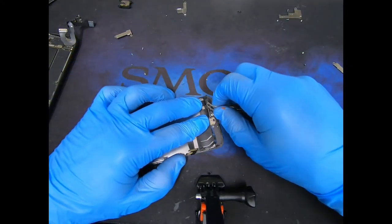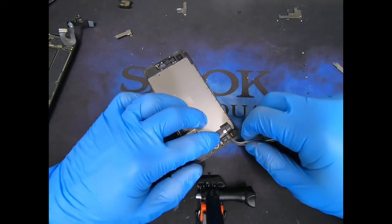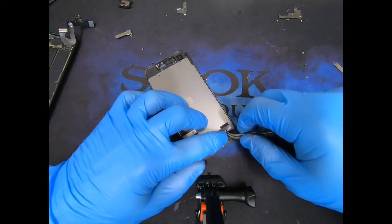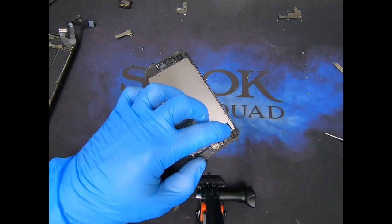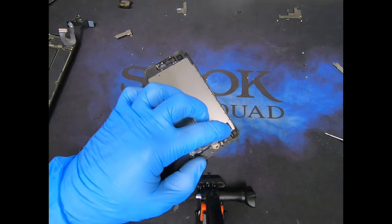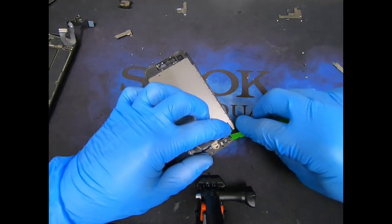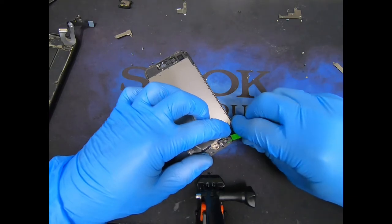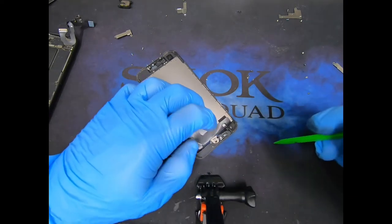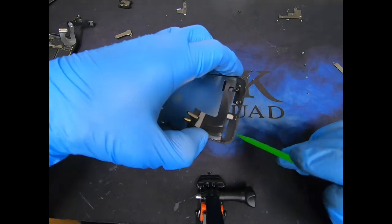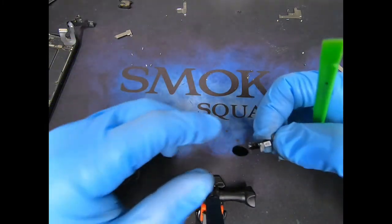Disconnect the home button. We're going to remove the screen. I'm going to dip my spudger into a little bit of alcohol. Be very careful removing this. You don't want to tear it. You will lose home button functionality and fingerprint. That's that.